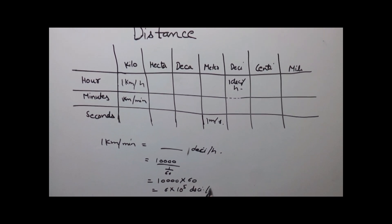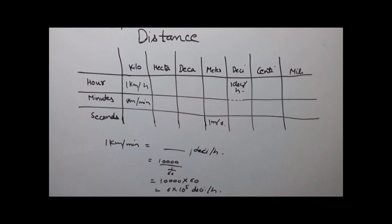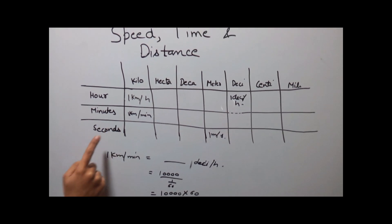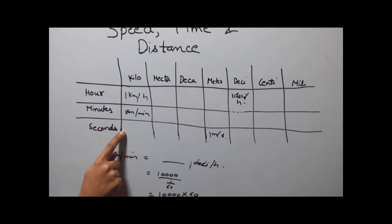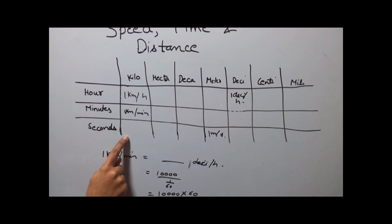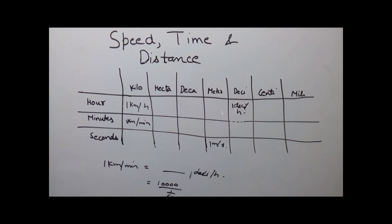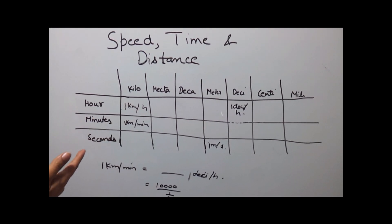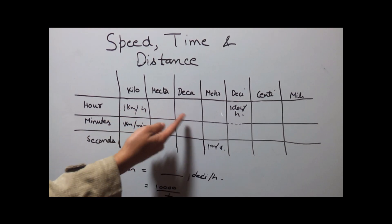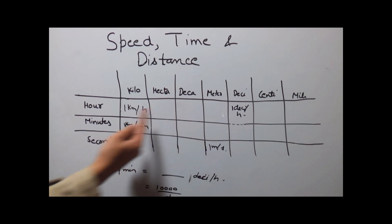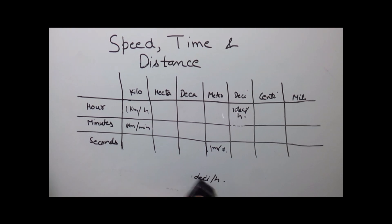What you need to remember in this type of conversion is: if you are converting from minutes to seconds — that is going vertically down — then multiply. If you are going in the upward direction then divide. Similarly for horizontal conversion: if you are shifting from left to right then multiply, and if you are shifting from right to left then divide.